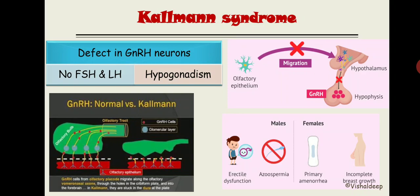The preoptic nucleus has two portions: a ventrolateral portion and a medial portion. The medial preoptic nucleus secretes GnRH, while the ventrolateral preoptic nucleus promotes sleep. So there is a difference between ventrolateral and medial preoptic nuclei.